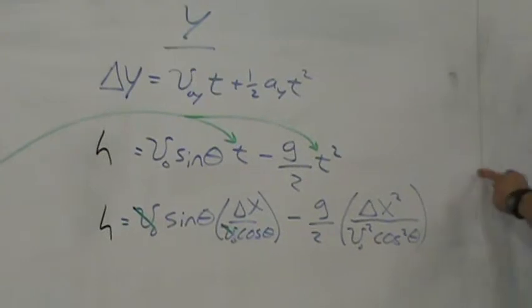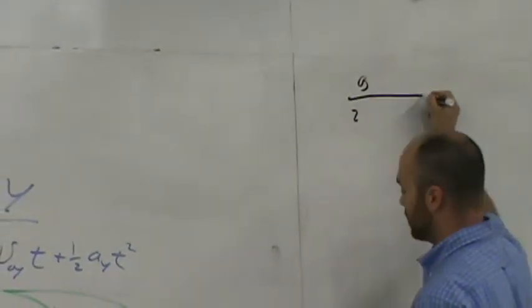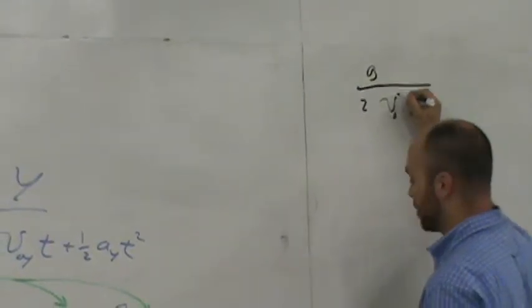So let me write it up here. So this is going to be positive g over 2, divided by v-naught squared cos squared theta.